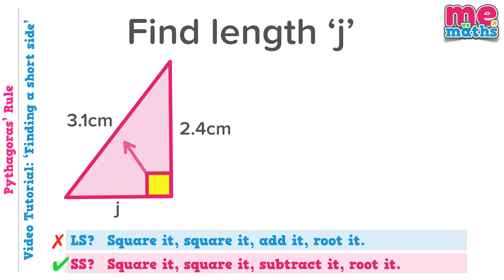So square the two given sides. 3.1 squared is 9.61. And 2.4 squared is 5.76. So now we need to subtract. Again, be sure to subtract the smaller value from the larger one.